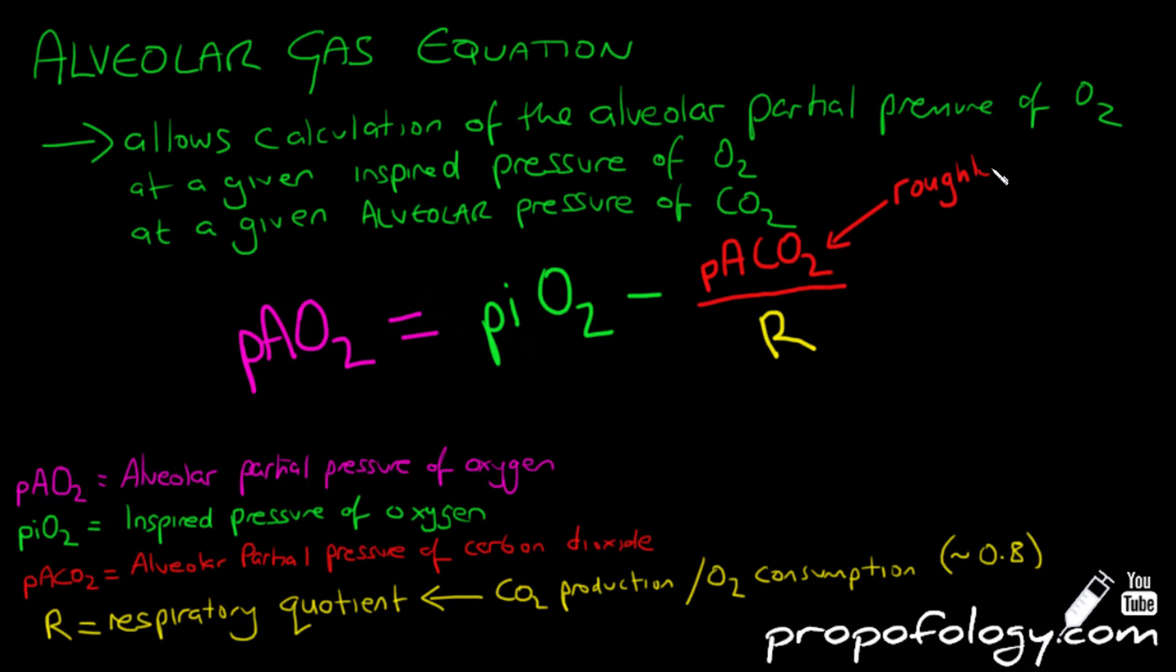We normally get a value around 0.8. The PACO2, which is the alveolar partial pressure of carbon dioxide, is approximately the same as the PaCO2, which is the partial pressure of arterial carbon dioxide. This is due to the rapid diffusion of CO2 across the body. The only thing we don't know here is the partial pressure of inspired oxygen.